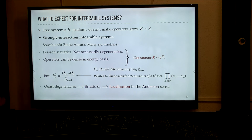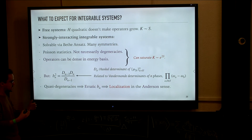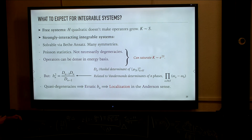So we have that the two ingredients granting saturation of the Krylov dimension are satisfied, and we would expect that in strongly interacting integrable systems the Krylov space is also maximal — and it seems this is no different from what we saw in chaotic systems. However, the difference arises at the dynamical level. How is this Krylov space actually explored? We notice that the Lanczos coefficients have a slightly different behavior: they become erratic. This is because there is a bijective relation between the moments of the two-point function and the Lanczos coefficients.